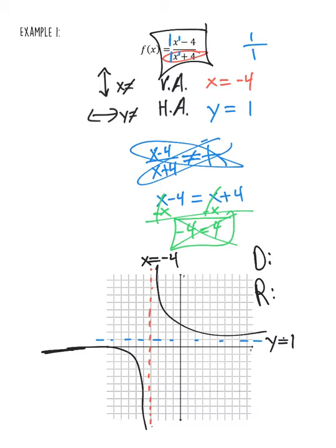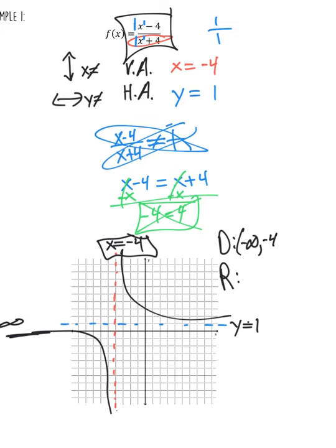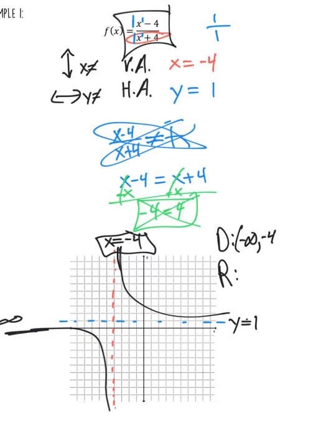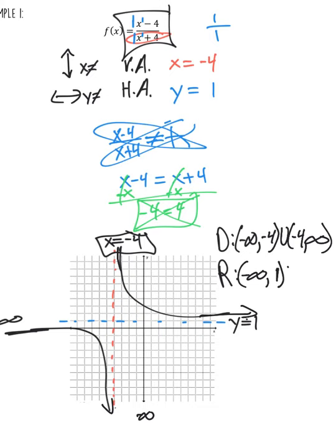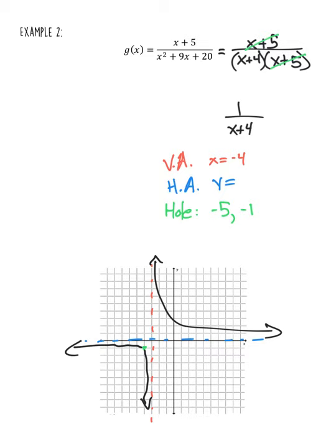The black line will hit negative infinity on my domain and go all the way up to the x value negative four. Because it's going all the way up to negative four but not including it, we put parentheses. If it was included, you would put a bracket. So domain is negative infinity to negative four, union negative four to infinity. Range is going to be basically the same thing — starting at negative infinity, all the way up to that blue line which is one. Since it's not included, I have a parenthesis, then union one to infinity.